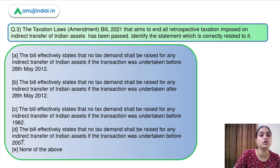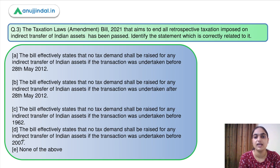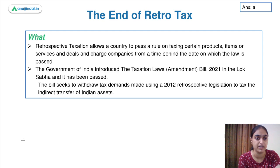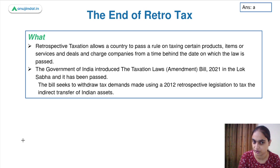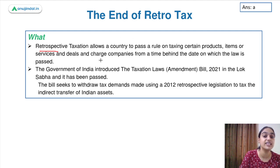Moving on to the next topic and question: The Taxation Laws Amendment Bill 2021, which aims at ending all retrospective taxation imposed on indirect transfer of Indian assets, has been passed. You have to identify the correctly related statement. Let's discuss the end of retro tax, which has been a lot in the news. First of all, what is retro tax or retrospective taxation?